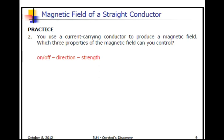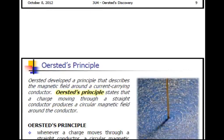If you use a current-carrying conductor to produce a magnetic field, which three properties can you control? You can turn the field on or off by turning the current on or off. You can change the direction by making the current go in the opposite direction. And you can change the strength of the field by increasing the amount of current. There's a direct relationship between the amount of current and the strength of the field - the higher the amperes going through the wire, the stronger the magnetic field will be.